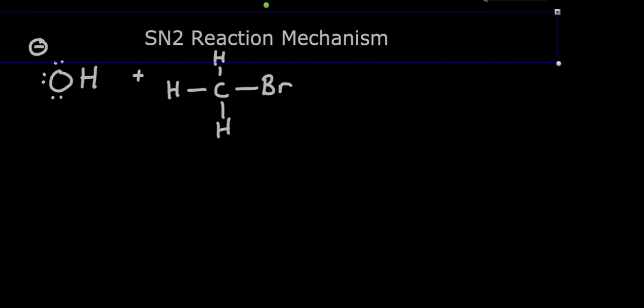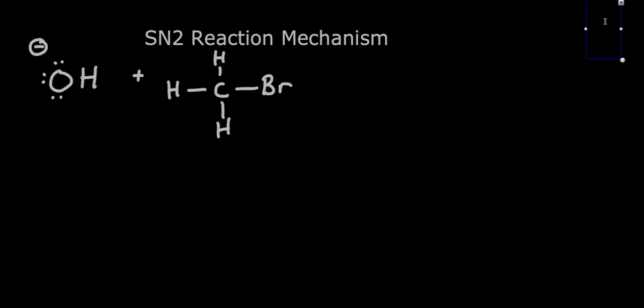In the reaction mechanism, we show exactly what's happening at every point in time and how the bonds are broken and made. Here we have our first reaction. It's got a name — the SN2 reaction. The name's not important, but it's the one from the top reaction on the previous slide. So we've got an alkyl bromide.